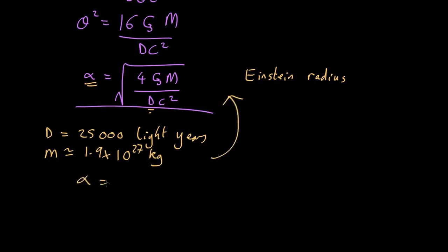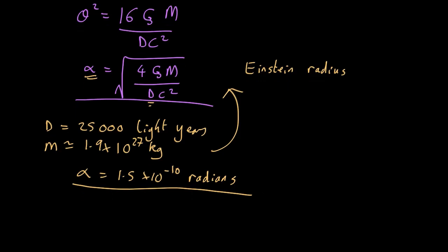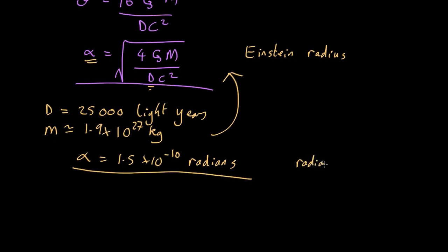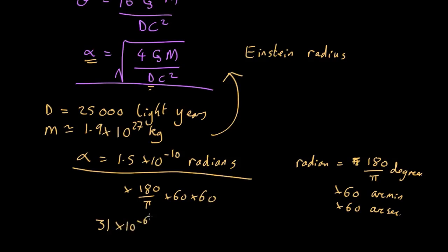And you end up with alpha equals 1.5 by 10 to the minus 10 radians. We need to convert that into some unit we can understand. So a radian is 180 over pi degrees. So multiply by 180 over pi. That will give us degrees, but the angle is going to be much smaller than a degree. So then we have to times 60 for arc minutes, times another 60 to get it to arc seconds. Because an arc minute is a 60th of a degree and an arc second is a 60th of an arc minute. So multiply by 180 over pi times 60 times 60 gives you 31 times 10 to the minus 6 arc seconds. So 31 micro arc seconds.